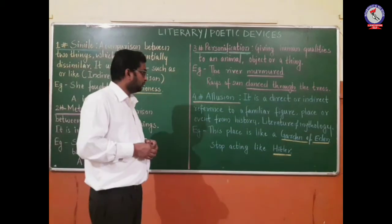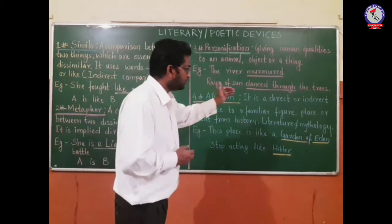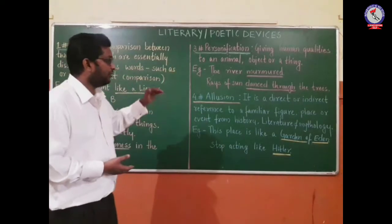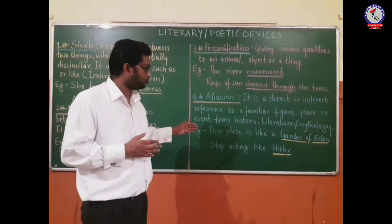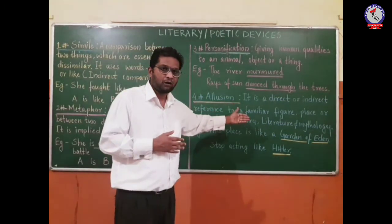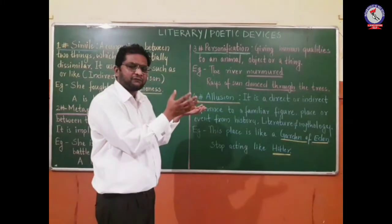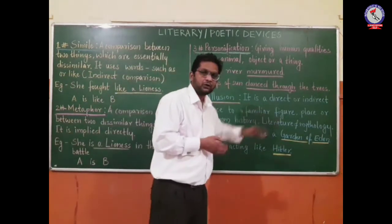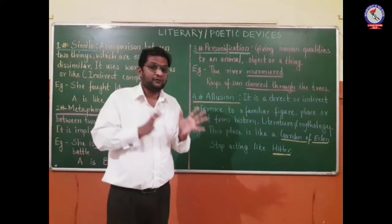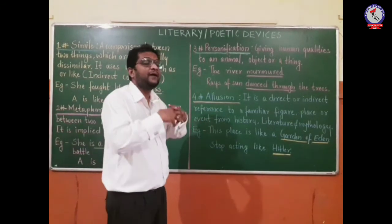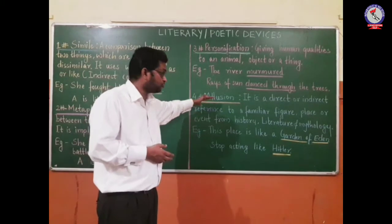The fourth poetic device is allusion. It is a direct or indirect reference to a familiar figure, place, or event from history, literature, or mythology. Whenever we give reference to a familiar figure, place, or event from the past — from history — to emphasize importance or significance, that is called allusion.